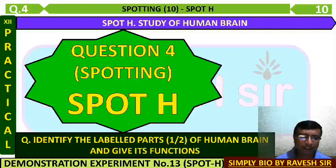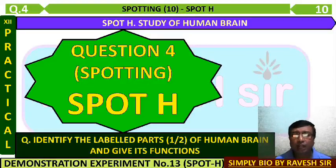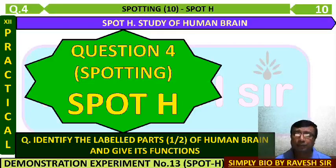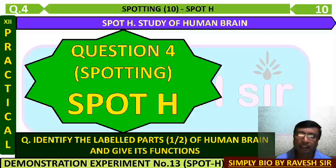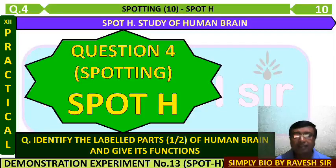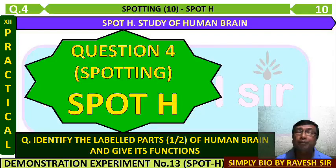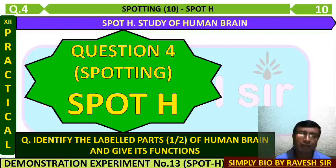The question asks you to identify the labeled or marked part of the human brain. It will be labeled with an arrow, and of course you need to state its function. Either one part or two parts of the human brain will be asked along with its function - identify the labeled part and state its functions.